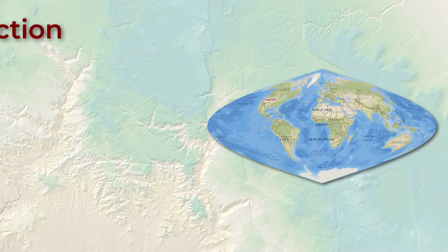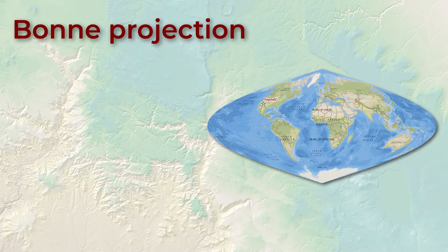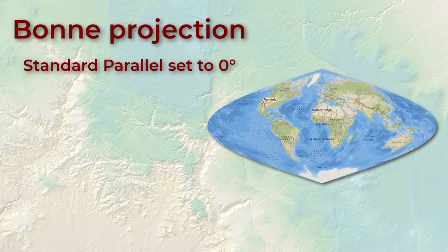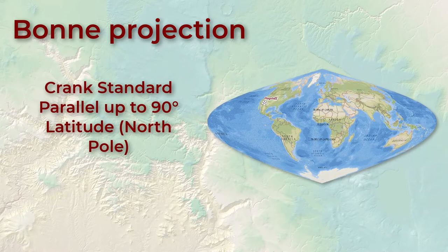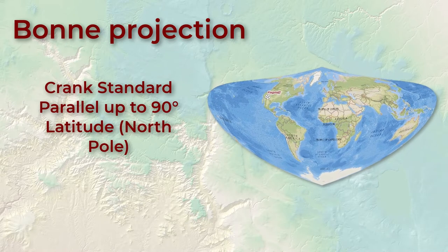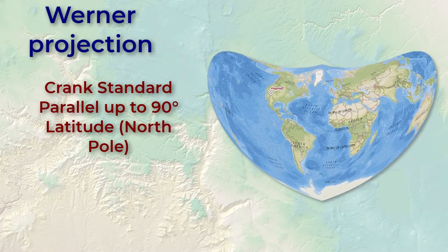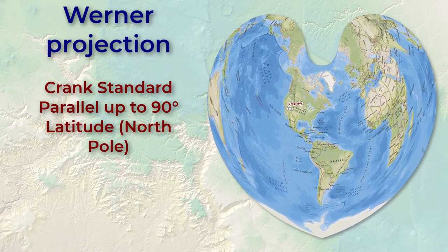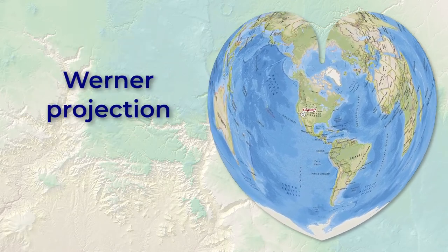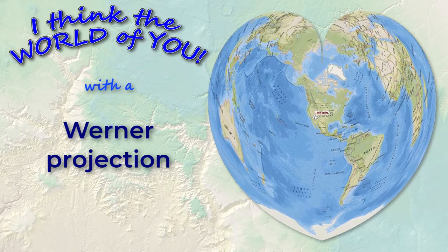This one here is called the Bonne projection and there's nothing particularly special about it by itself. But if we adjust one of the parameters of the Bonne projection — specifically if we set the standard parallel to be at the north pole — it becomes a special case called the Werner projection. This one is just graphically fun. I don't know if anybody uses it analytically, but it does make a fun shape.